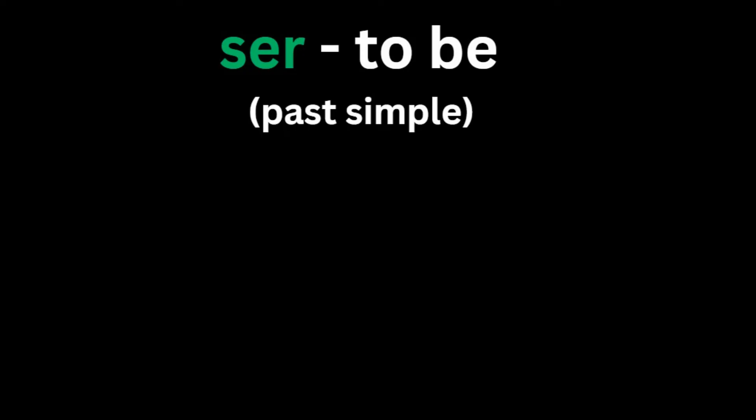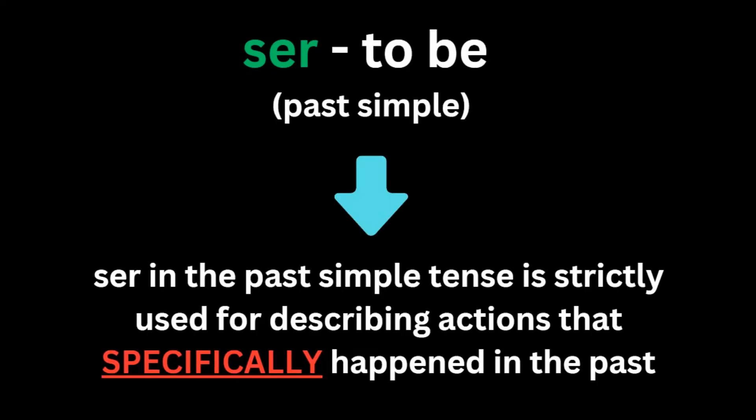Currently, we're working in the past simple, also known as the preterite. As I said in my previous video, Spanish has many variations of the past, such as the imperfect, conditional, and so on. However, what's important with the verb ser is that it's used in the past simple strictly for describing actions that specifically happened in the past. I myself struggled with the verb ser in the past simple, but I can describe it in the easiest way possible.